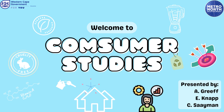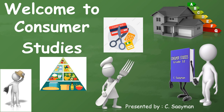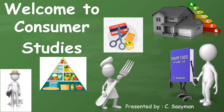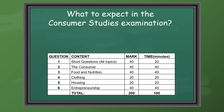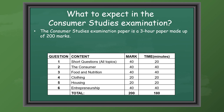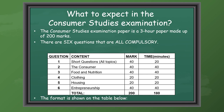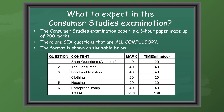Good day learners of the Western Cape. On the 1st of December you will be writing your Grade 12 NSC exams and today we will look at what to expect in the Consumer Studies exam paper. The paper is a three-hour paper made up of 200 marks. There are six questions that are all compulsory. The format is shown on the table below and it is very important to look at the time allocation.